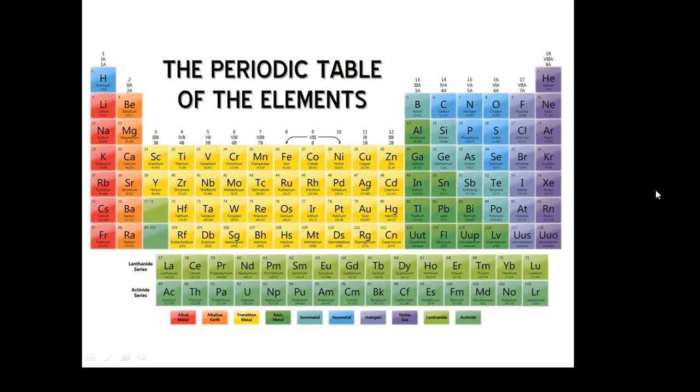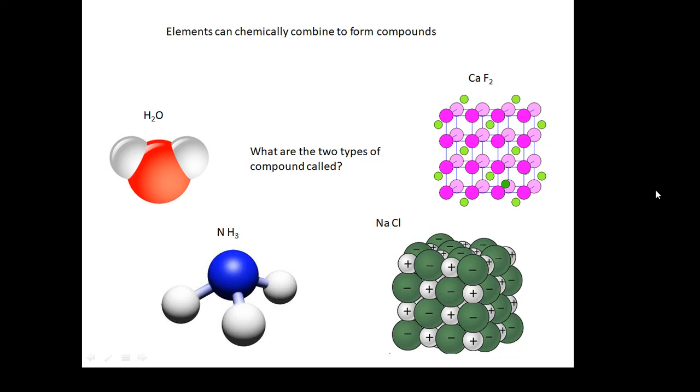Elements can chemically combine to form compounds. I'm not talking about a mixture where they're just jumbled together like red and blue smarties - a chemical reaction has happened, they are chemically combined. There are two types of compound, and they are called covalent and ionic.